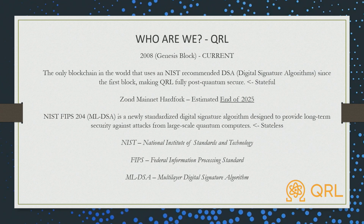Our project is the Quantum Resistant Ledger. We've been running our own layer one since 2018. We're the only blockchain in the world that uses a NIST-recommended DSA since the first block, which makes us fully quantum computer secure. We have coming up this year by 2025 our Zond hard fork, and with the hard fork we're going to be migrating to some new NIST standards.